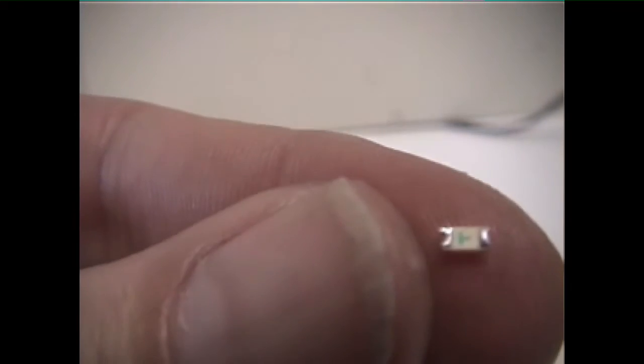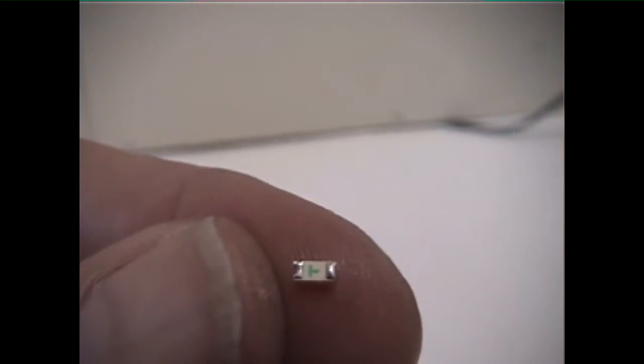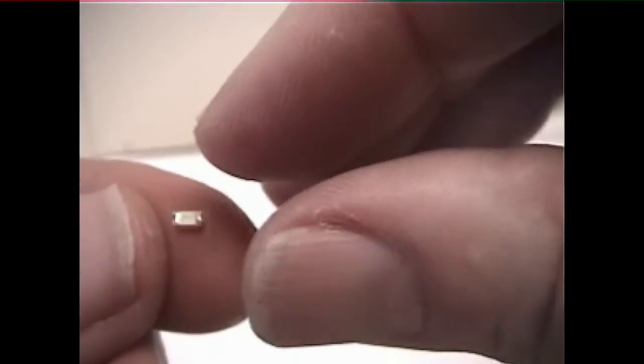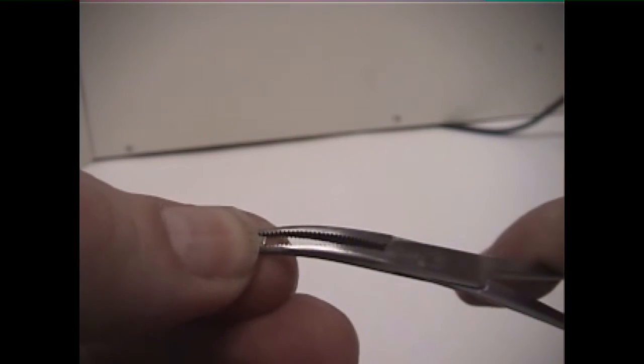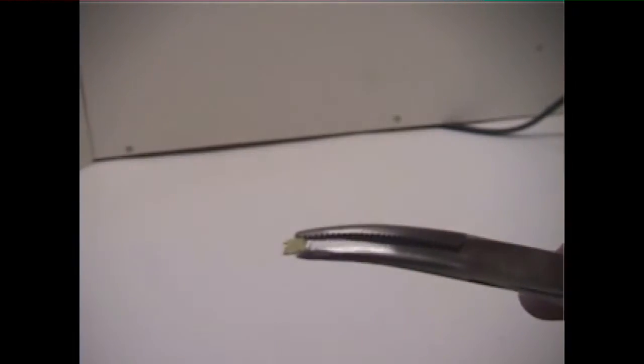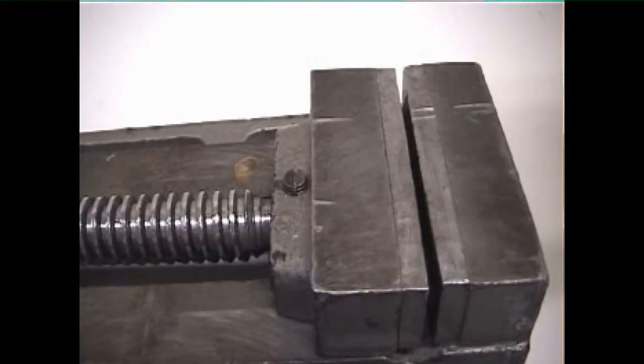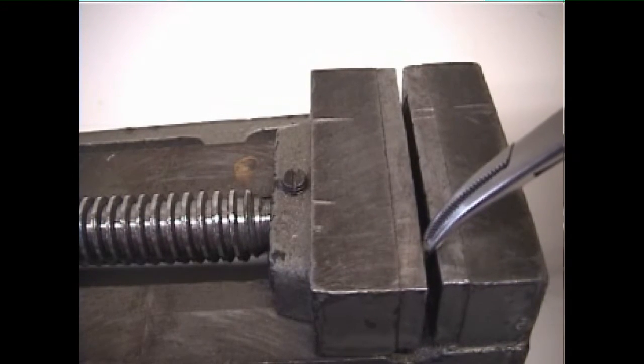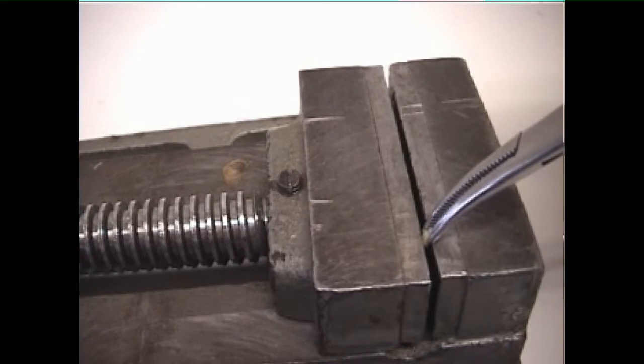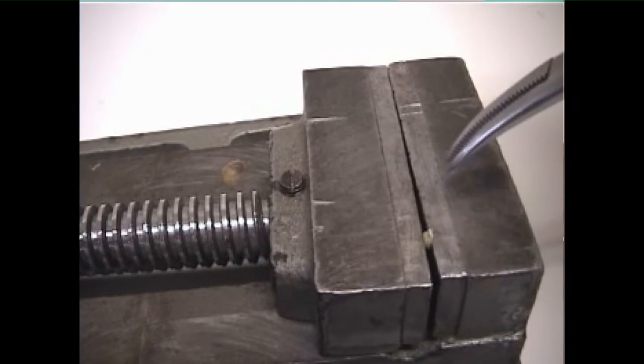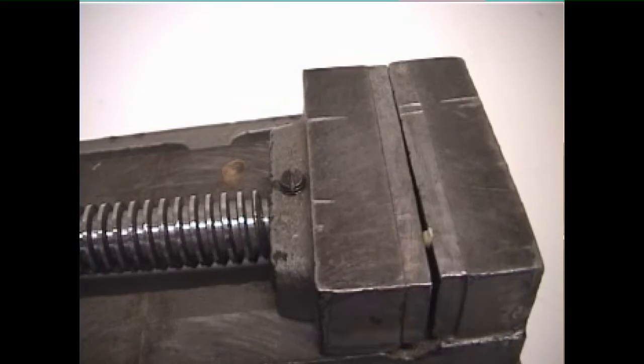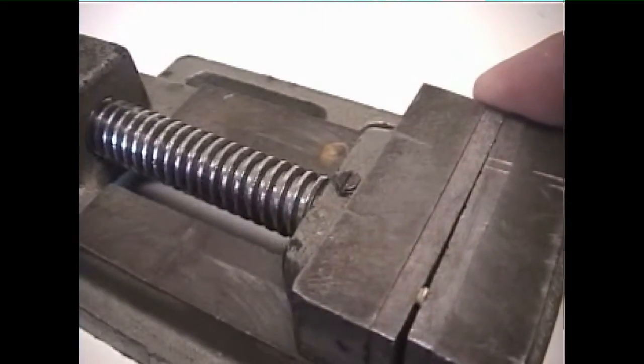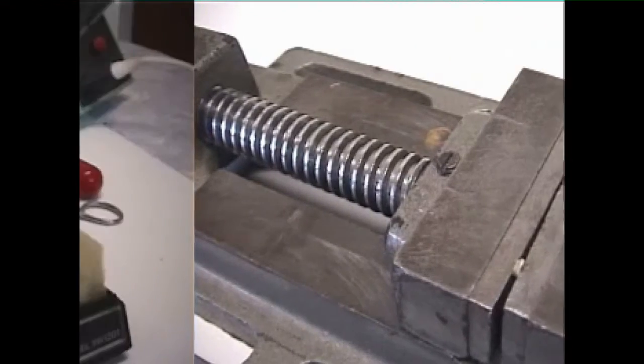We will solder leads to this 1206 SMD LED. Notice the green mark points to the right. We will put our negative or black lead here. Turn it over. Position it. Then clamp it with the hemostats. Now using the hemostats, clamp the LED into the vise or whatever you are using to hold the LED. Be careful not to exert too much pressure on the LED. Move the vise to a position that is easy to work.